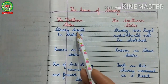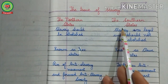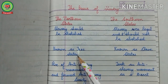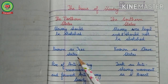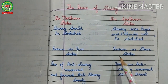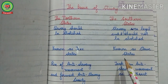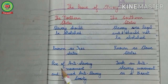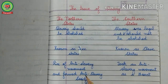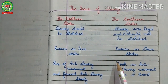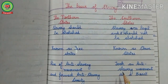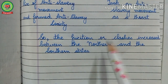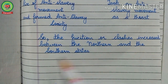According to the northern states, slavery should be abolished. According to the southern states, slavery was legal and it should not be abolished. The northern states were known as free states as slavery did not exist there, while the southern states were known as slave states. In the northern states there was a rise of anti-slavery movement and they formed an anti-slavery society. The southern states took this anti-slavery movement as a threat, so friction and clashes increased between the northern and the southern states.